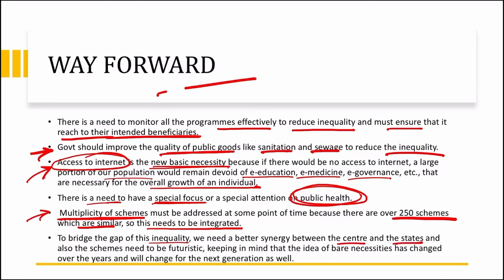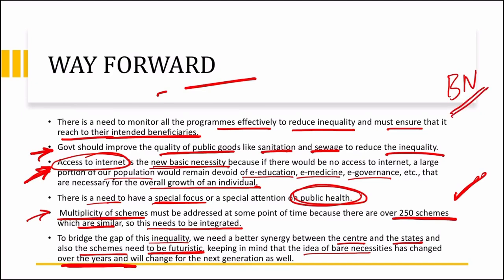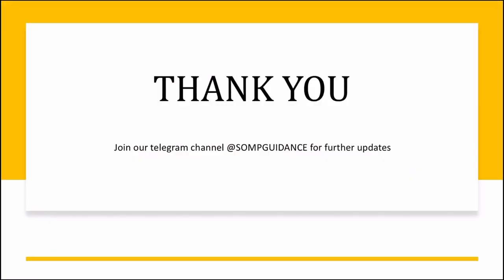Policy makers need to ensure that schemes are designed in a futuristic way — for example, considering access to internet as a new basic necessity. All such schemes and ideas of bare necessity need to be futuristic, because the definition of necessities can change over the years. These are few measures which we can adopt to improve our access to bare necessities. That's all for today. If you found this video helpful, like the video, comment on it, and subscribe to the channel. You can also join our Telegram channel at SOMP Guiders for further updates. Thank you.